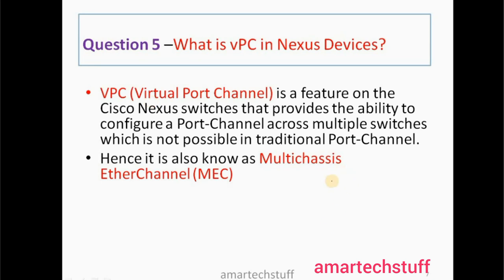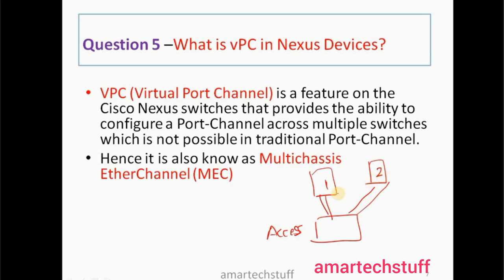Consider one access switch with uplinks going to Switch 1 and Switch 2, which are Nexus switches. Using traditional port channel, from the access switch you create one port channel to Switch 1 and one port channel to Switch 2 — two different port channels, using one at a time. But using vPC, you can achieve multi-chassis EtherChannel, bundling all four ports into a single port channel. This is what multi-chassis EtherChannel is.